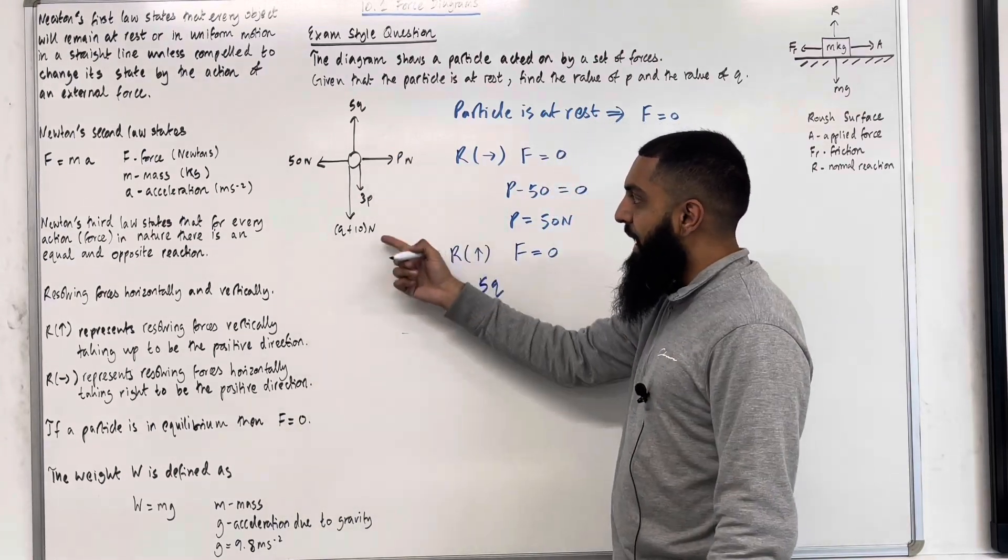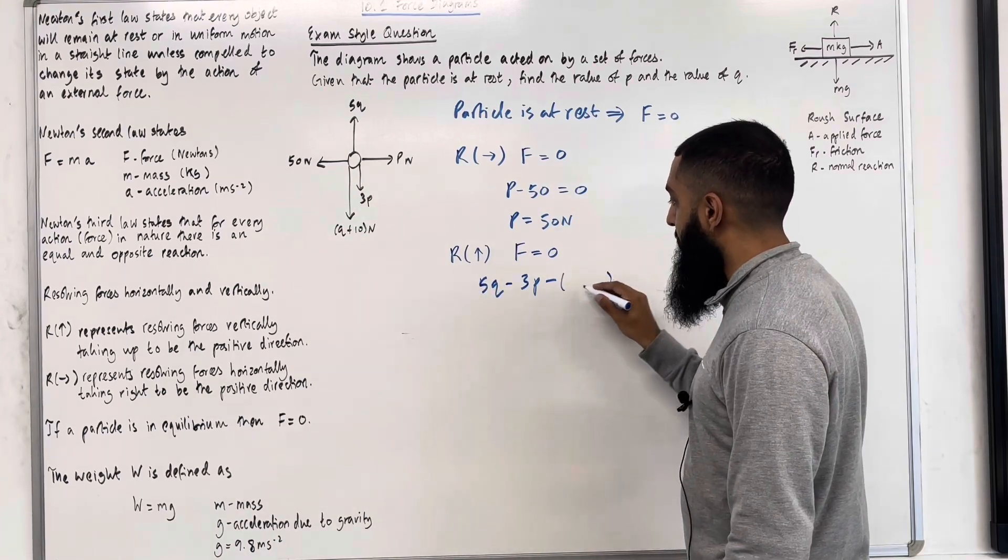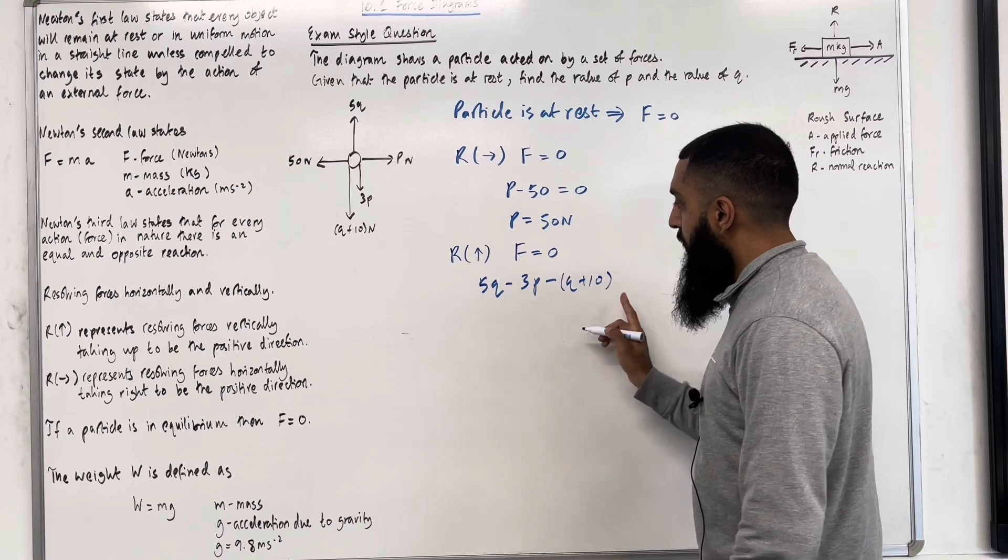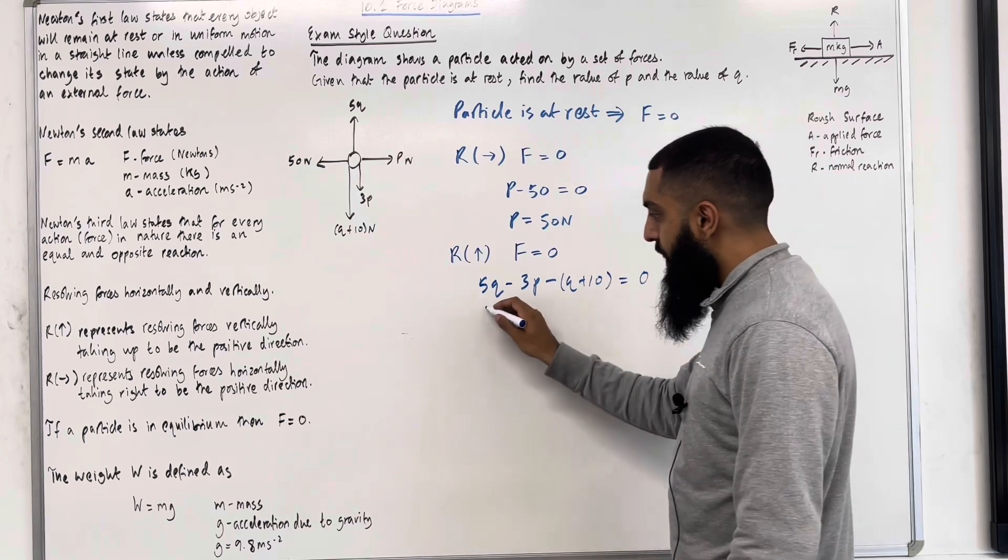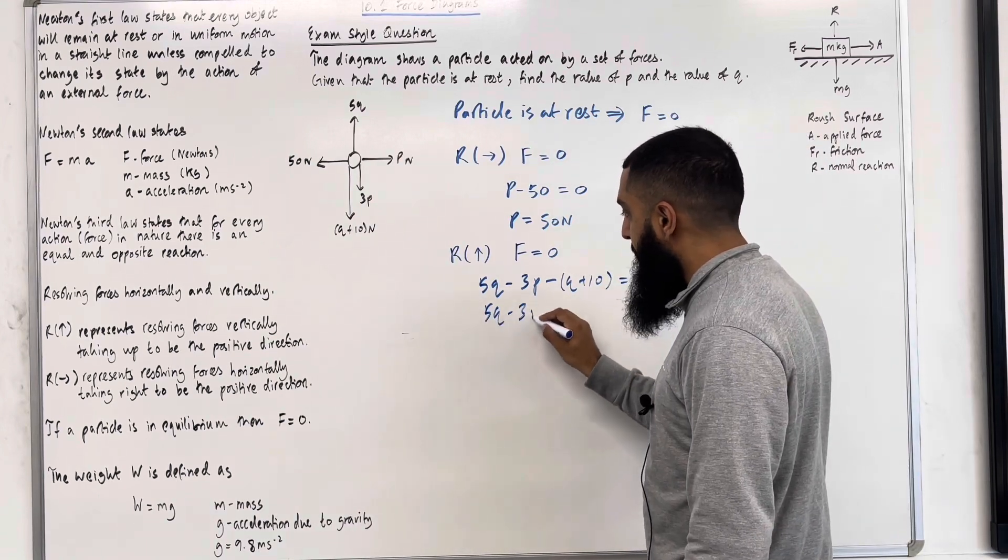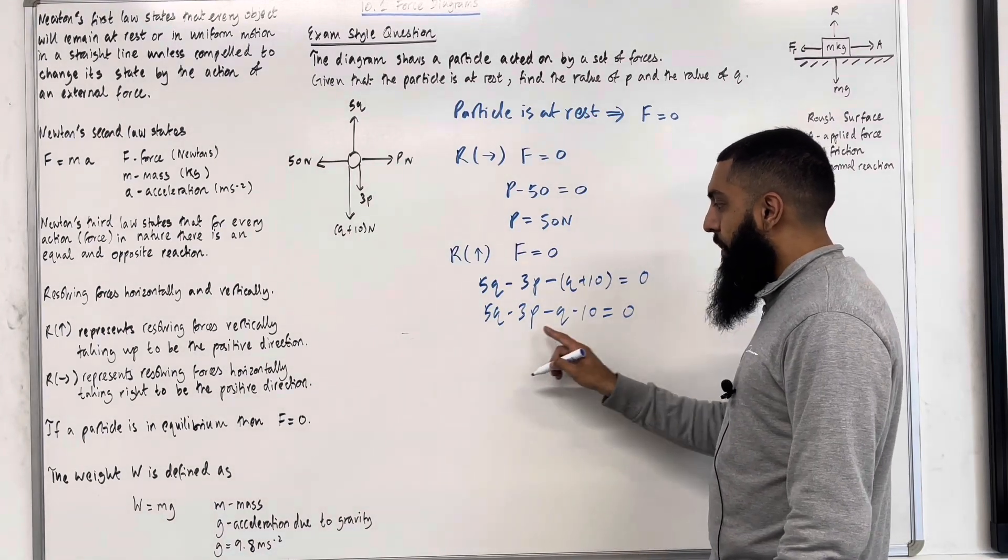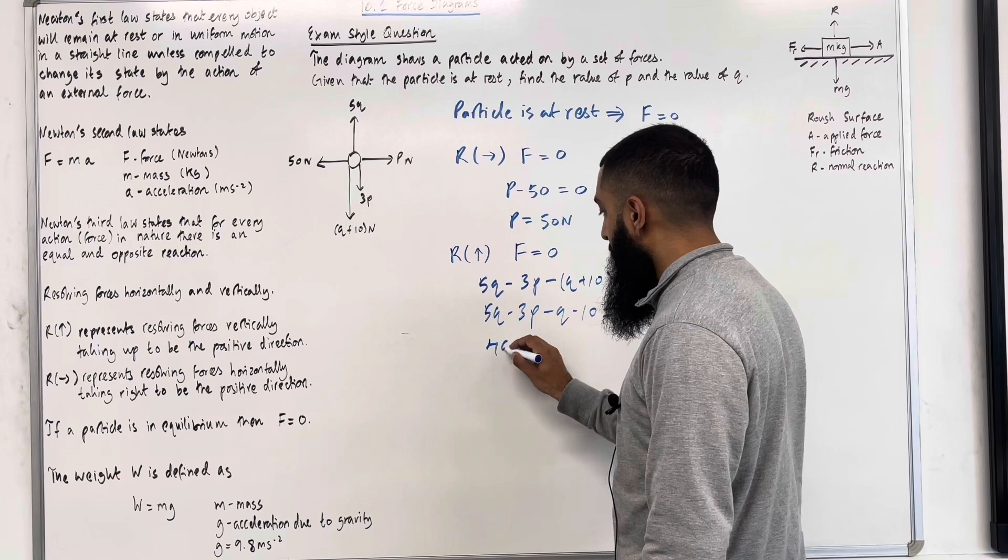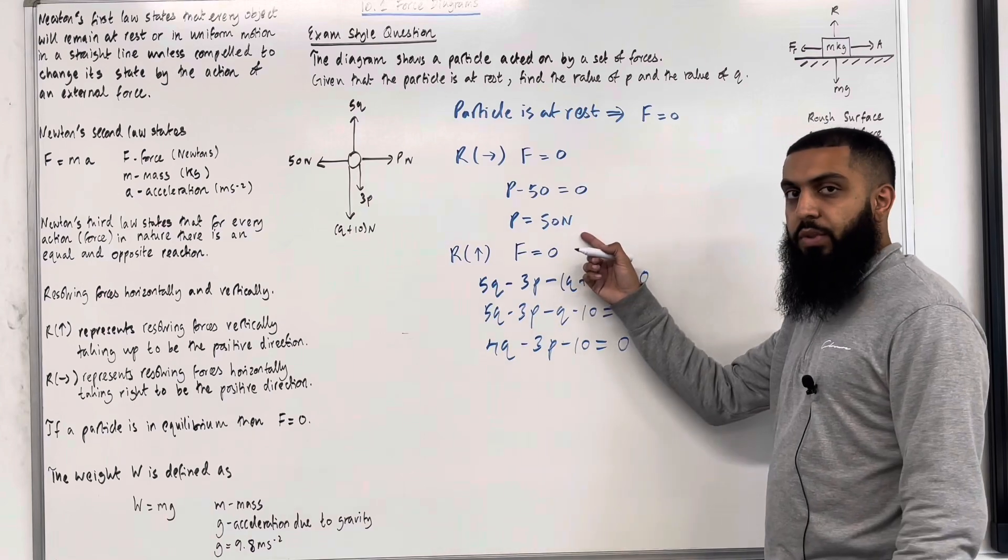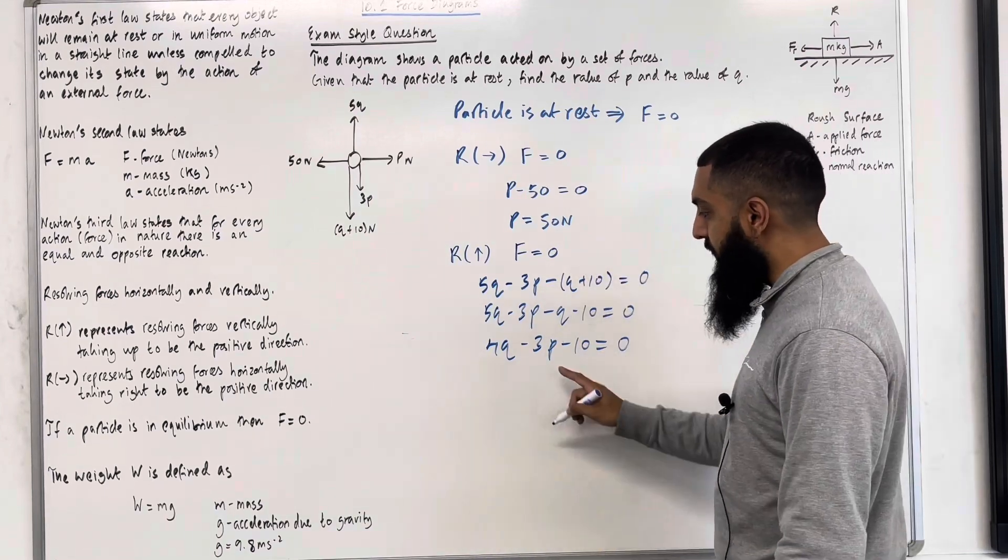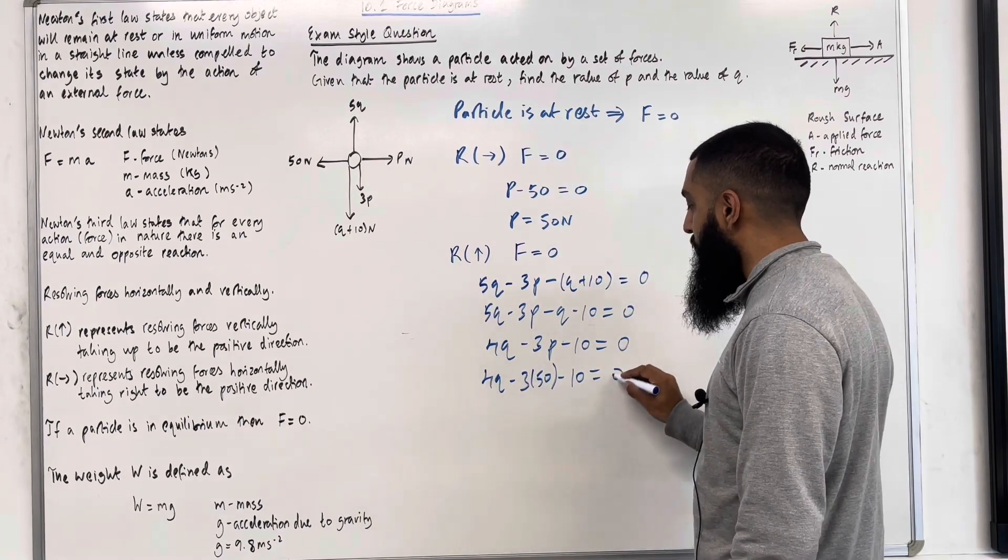Take away 3P acting downwards. Take away Q plus 10 acting downwards. So I can put Q plus 10 in brackets. So that represents the F in the equation. This has to equal zero. So I've got 5Q minus 3P minus Q minus 10 equals zero. 5Q minus Q is 4Q. So 4Q minus 3P minus 10 equals zero. I know that P equals 50, so I can substitute P equals 50 into here. I've got 4Q minus 3 lots of 50 minus 10 equals zero.